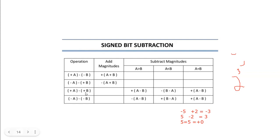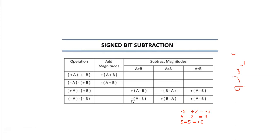If it is plus A minus B, you check whether A is greater than B or not. If A is greater, you do A minus B and attach the sign of A. If A is less than B, you attach the sign bit of B. If A equals B, you do A minus B and get zero, with a positive sign bit. When both signs are the same, you take the subtraction symbol outside as the sign bit and do A minus B. If A is less than B, you do B minus A and attach the positive symbol. If A equals B, the result is zero with a positive symbol.